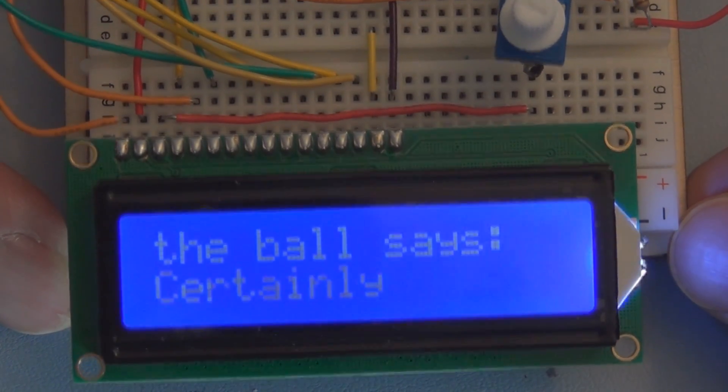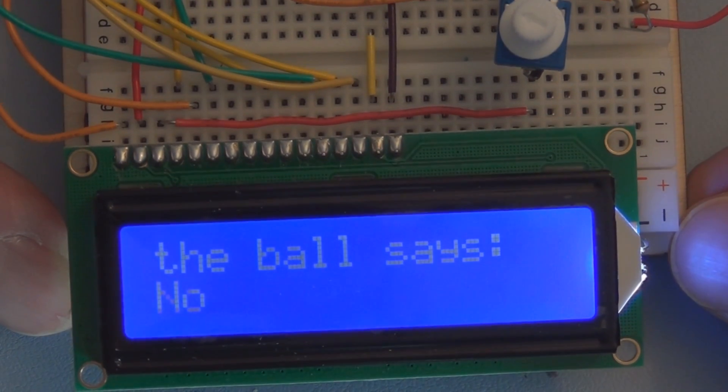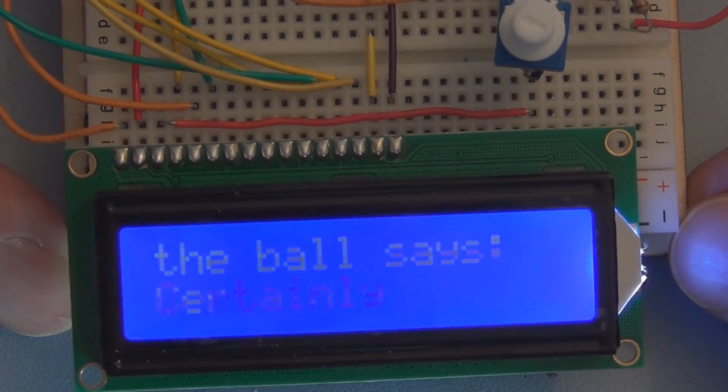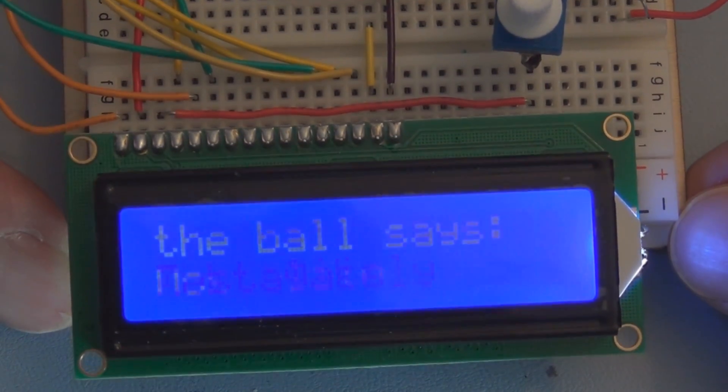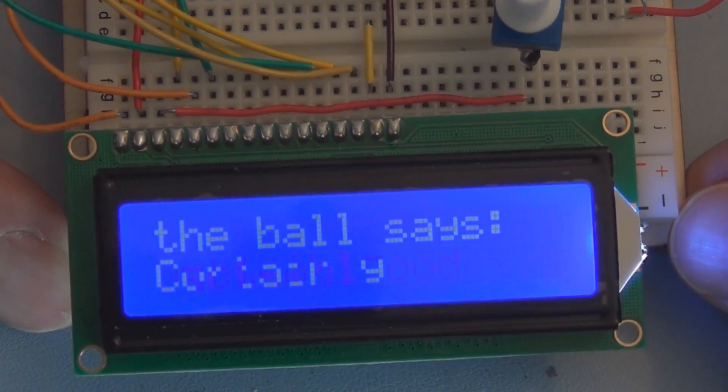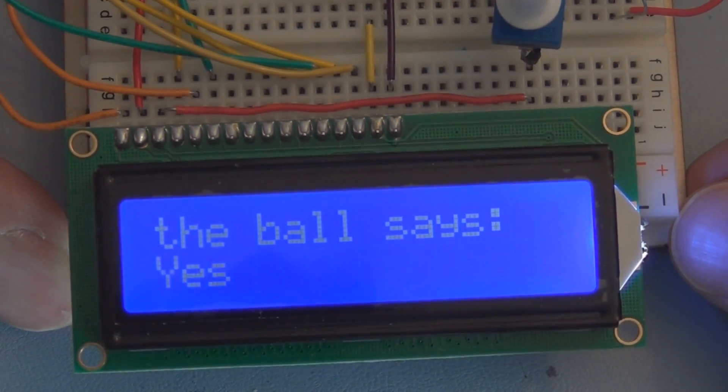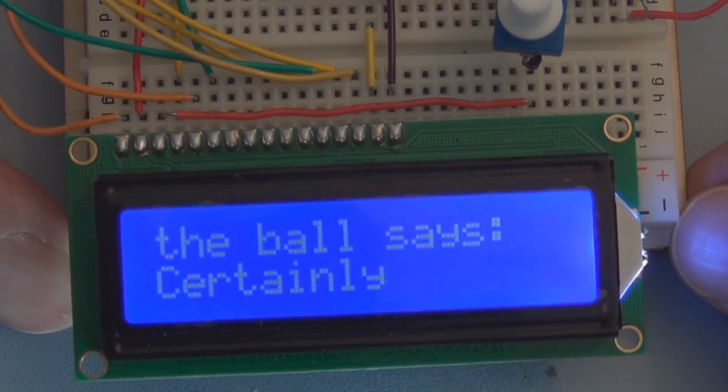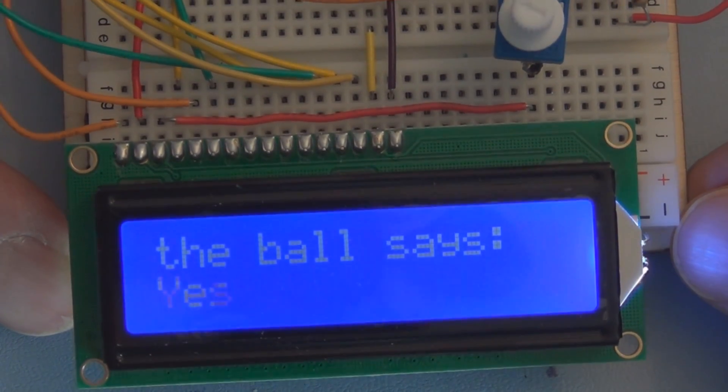Every time that tilt switch is activated. So again, we've done this in the past where we keep track of current and previous state of that tilt switch. And based on that value, that initiates some action. In this case, giving us these random answers to our questions, whatever those might be.